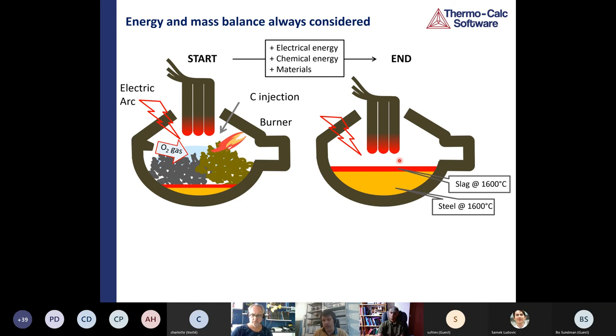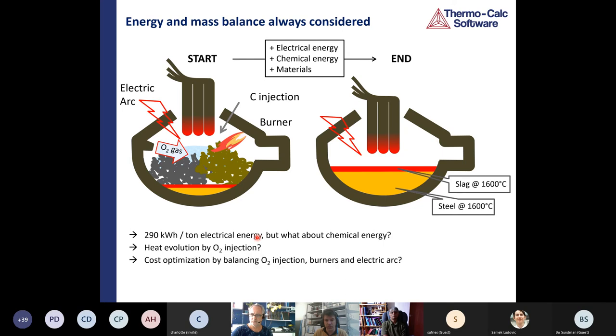Important questions that equilibrium thermodynamics can answer are: people are always talking about the amount of electrical consumption of an electric arc furnace. 290 kilowatt hours per tonne is considered an extremely good value. But of course, if you're adding huge amount of chemical energy at the same time, that's meaningless. With thermodynamic calculations, you can separate the two. You can say how much chemical energy am I actually putting in, and what sort of electrical energy does that correspond to. You can calculate the heat evolution by oxygen injection due to exothermal oxidation reactions. This results in cost optimization and process optimization.